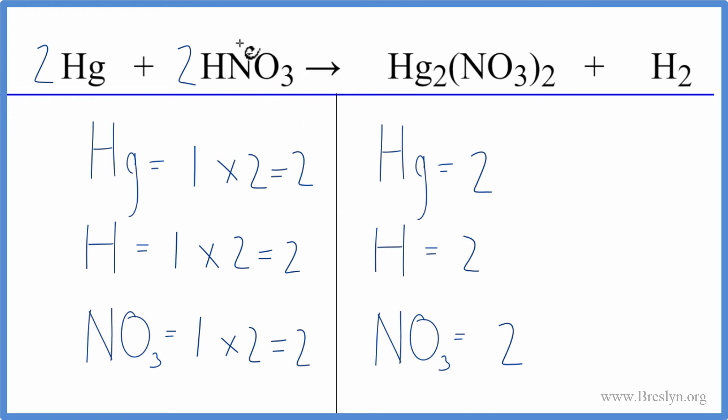So you can see how counting this nitrate as one item, if we have it on this side and this side, it makes the balancing really quick.